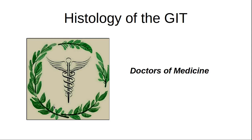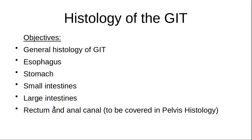Welcome back to the Digital Medicine channel. Today we will be looking at the histology of the GIT. The GIT runs from the oral cavity down to the anus, but we will not look at the histology of the oral cavity, the rectum, or the anal canal today — those will be covered in perianal histology. We will look at the general histology of the GIT: the esophagus, the stomach, and the intestines.